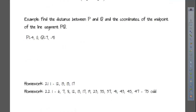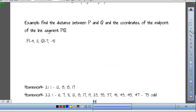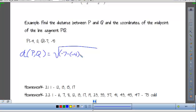So, for example, if I want to find the distance between P and Q, coordinates of the midpoint of the line segment. First I'm going to find distance. Again, we're going to do the difference between the corresponding coordinates and square that. It doesn't really matter which order we do it in.